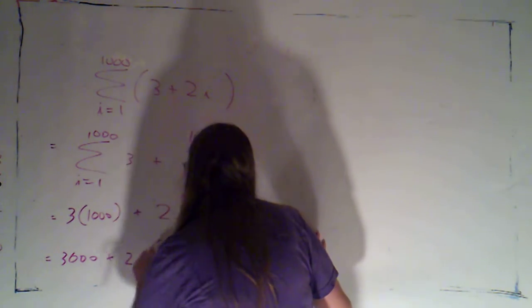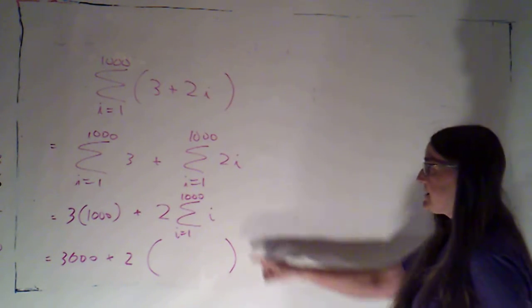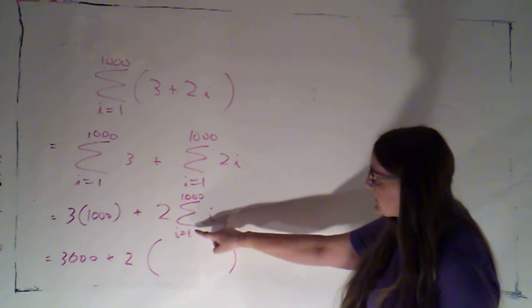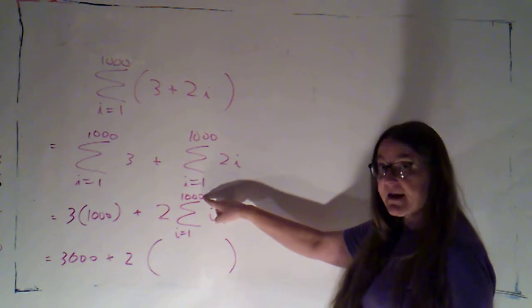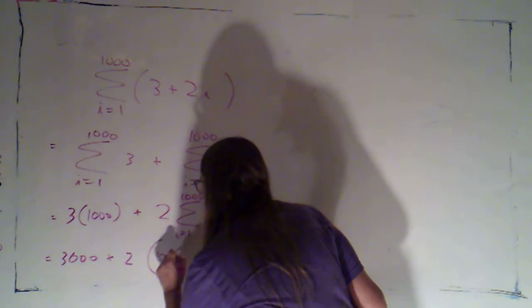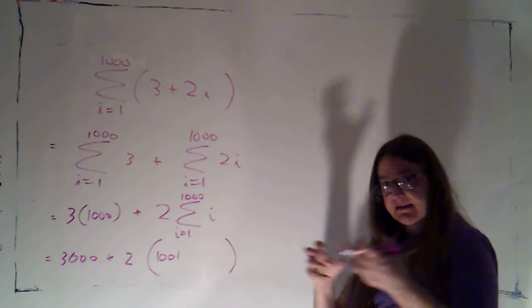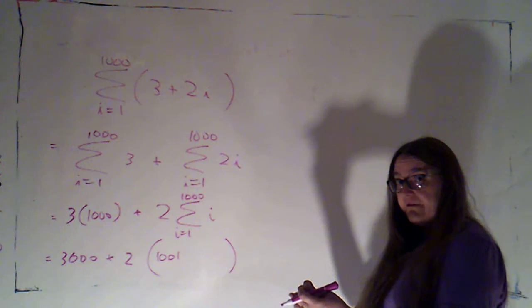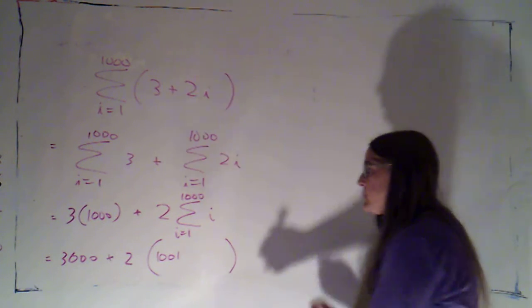This is going to be plus two times, now my formula is if I take the smallest number plus the biggest number, that's going to give me a thousand and one. So that's going to be the sum of each pair that I have. And then how many pairs will I have?